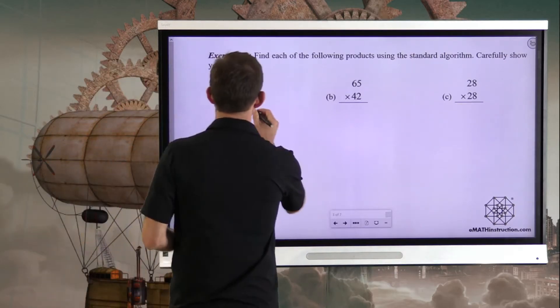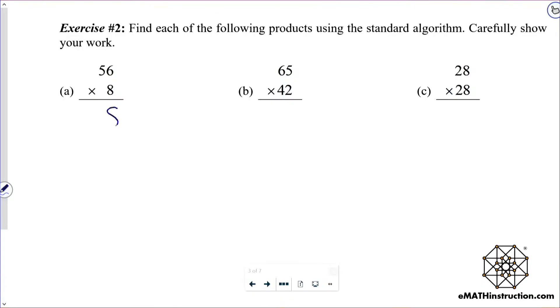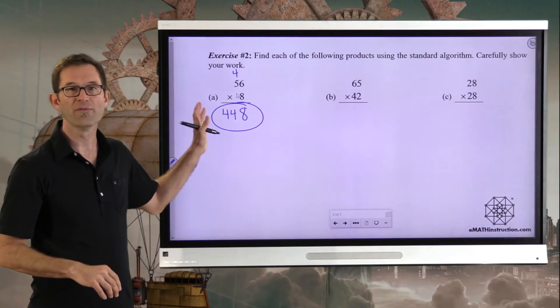Let's go through them. 56 times 8. First thing we're going to do is 8 times 6, and we're going to get 48. Remember, we write the 8 down, but we carry the 4 up here. We now do 8 times 5, and we get 40, and then we add the 4, so we get 44. So in total, 448 when we do 56 times 8.